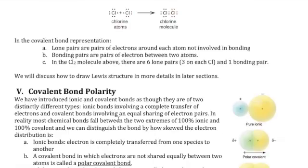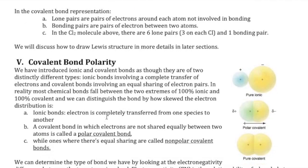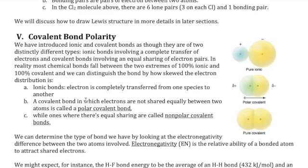A concept closely related to drawing Lewis structures is covalent bond polarity. To understand this, we compare ionic and covalent bonding. In an ionic bond, an electron is completely transferred from one species to another, forming full ions — a cation and an anion. In a covalent bond, electrons are shared; however, that sharing is not always equal.